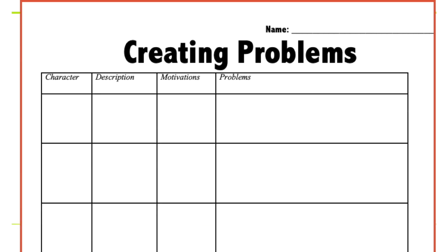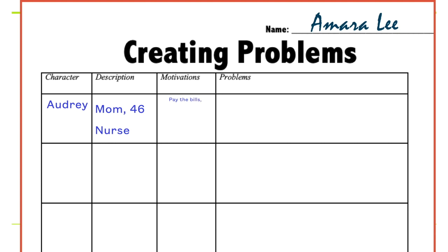I'm going to show you mine as an example. Write your name on your paper first. My name is Amarie — write it beautifully on the top line. Then start with your first character. I'm going to call my first character Audrey. She's a mom, she's 46 years old, and she's a nurse — just a vague description. I could add the color of her eyes, her hair, her race, how tall she is later. Right now I just need to know she's a mom, she's 46, and she's a nurse. Her motivations are simple: she wants to pay the bills, spend time with her kids, and she wants her kids to grow up to be good people.